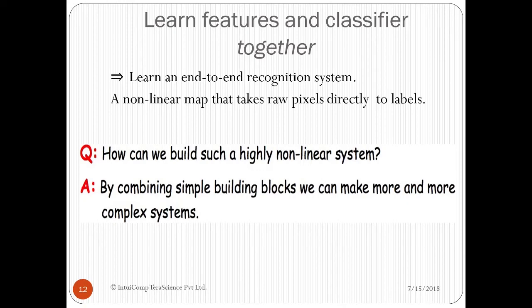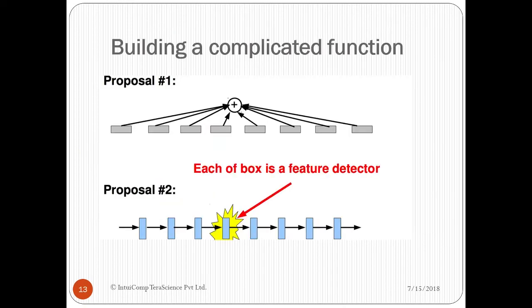Building a complicated function. Proposal 1 is to feed raw pixel values, represented by a gray box, to a node or a layer. Proposal 2 is to join these nodes or layers sequentially to make a network. Each of box is a feature detector and a simple non-linear function.